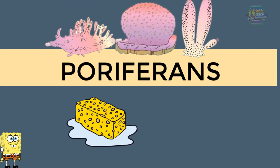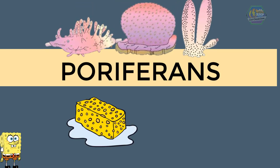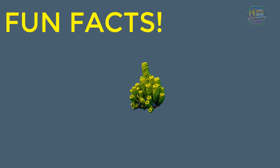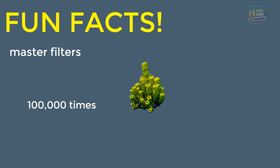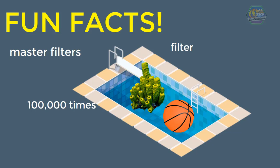You don't notice sponges move. Their body is covered with pores through which their food enters. Fun fact: sponges are master filters — they can filter an amount of water 100,000 times their size each day, meaning a basketball-sized sponge could filter an entire pool in one day.